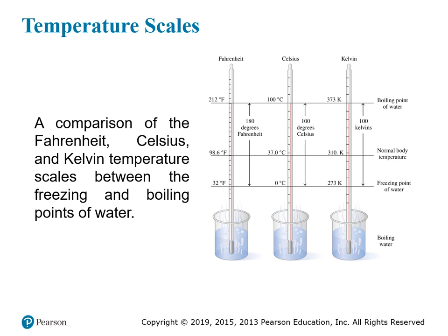Here we can see three different thermometers calibrated to these three different scales, all in beakers of boiling water. All of these thermometers are representing the same physical reality — the temperature of boiling water. The red alcohol in these thermometers all rises to the same level. The difference is in how we mark and scale the thermometers. On the Celsius scale, since this is the boiling point of water, this is 100 degrees Celsius; the freezing point of water would be zero degrees Celsius.